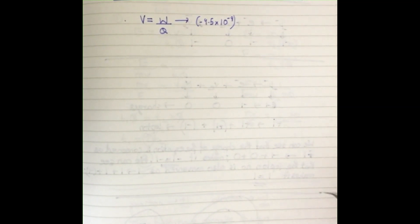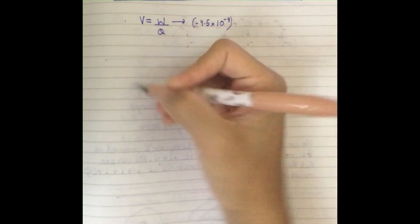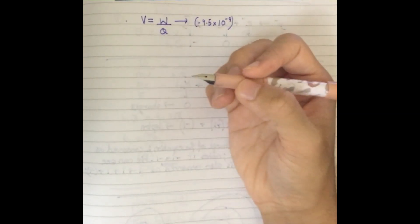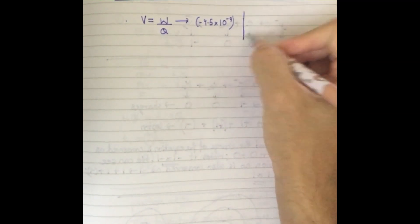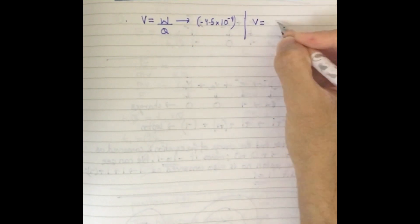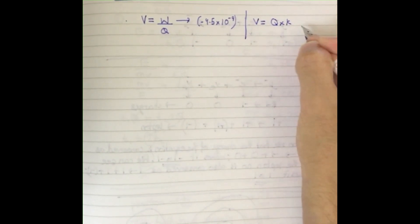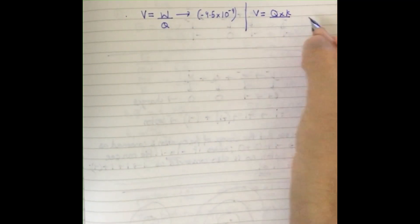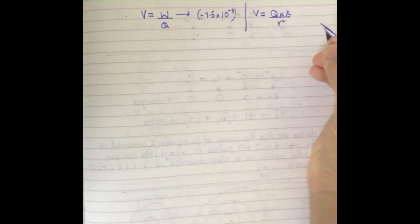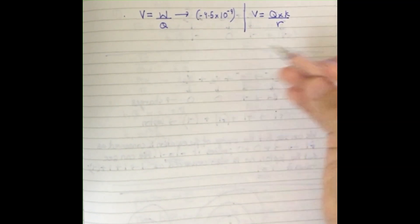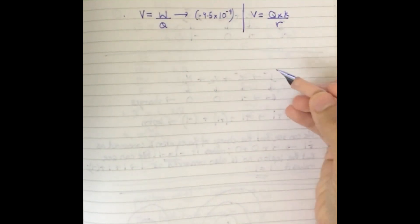We don't have the value of V — they did not give us V, so we have to calculate it. To calculate V, we use the formula V = kQ/r, because we need the electric potential due to a point charge.